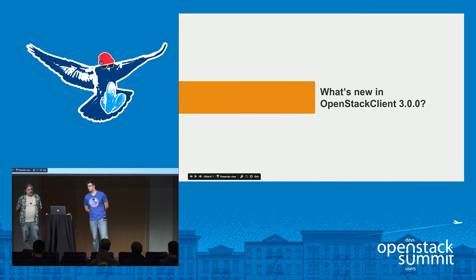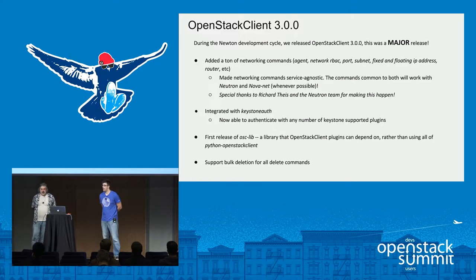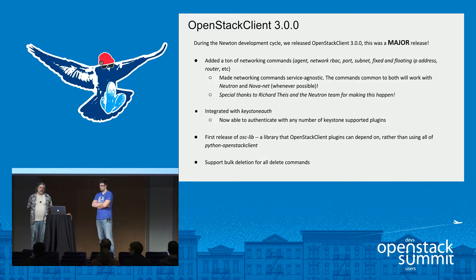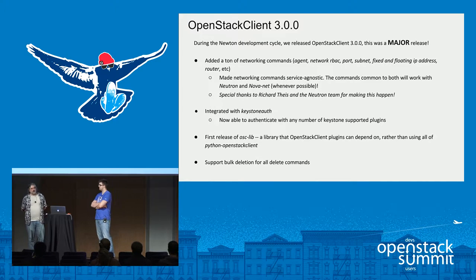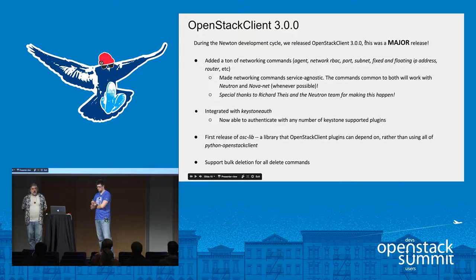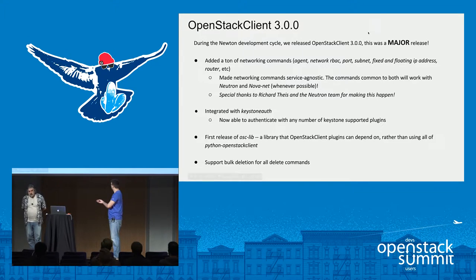So what's new in 3.0? We just did the 3.0 release in August. I spent the summer rewriting the authentication flow. There's a thing that exists now called OS Client Config that manages a clouds.yaml file for common clients. The Shade SDK uses it. It puts all of the cloud authentication and configuration things into a single file.